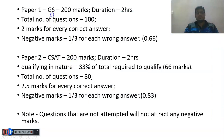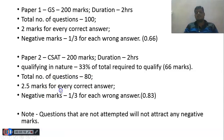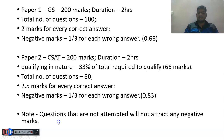Basic information: Paper 1 GS is for 200 marks, duration 2 hours, total number of questions 100, 2 marks for every correct answer, and negative marks of 1/3 as a penalty. Paper 2 CSAT is for 200 marks, duration 2 hours, qualifying in nature — 33% is mandatory to qualify — total number of questions 80, 2.5 marks for every correct answer, and penalty of 1/3 (which works out to approximately 0.83). Important note: questions that are not attempted will not attract any negative mark — questions you have not attempted will not carry any penalty.